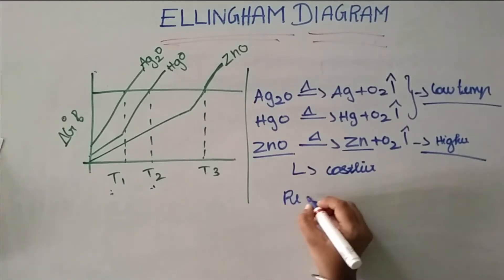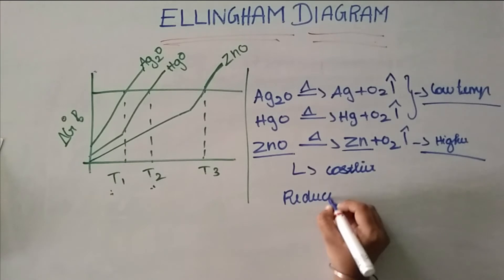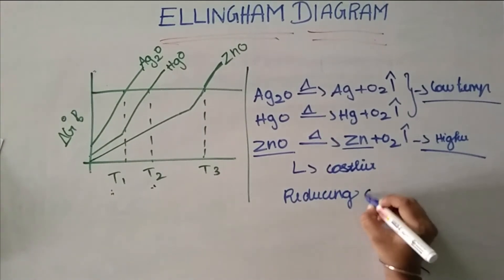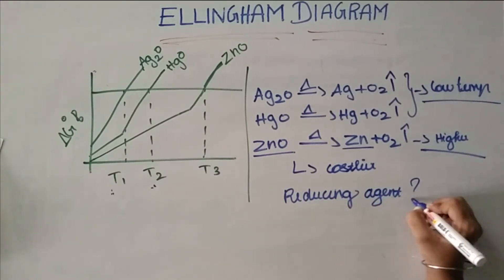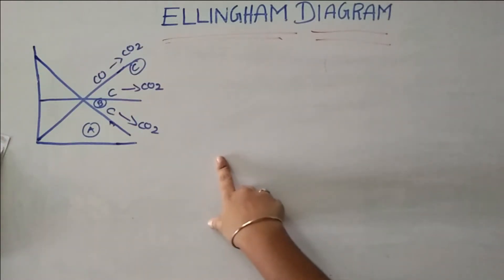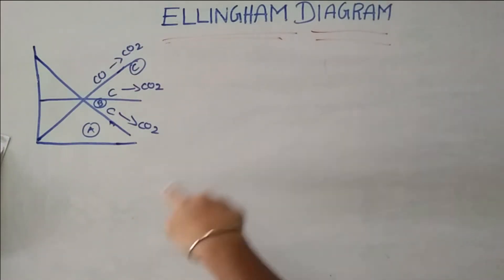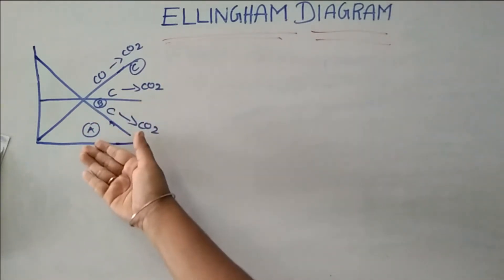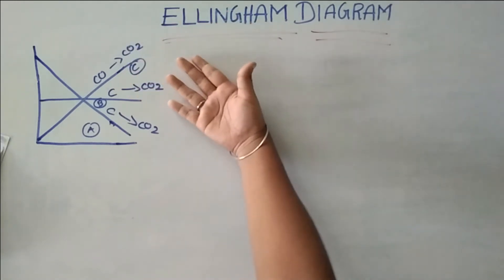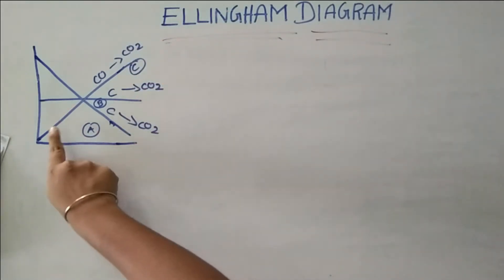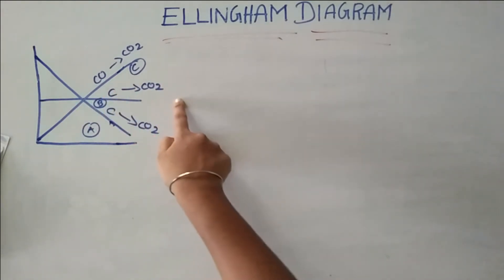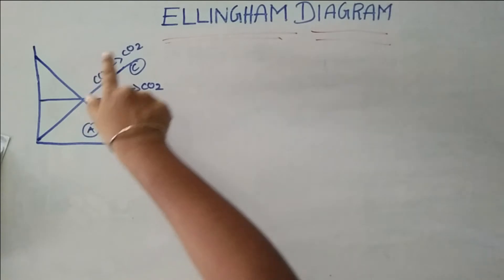That is the Ellingham diagram — used to find which is the best reducing agent. Now let's look at an example with three lines in the diagram. Line A represents carbon forming carbon dioxide (C + O₂ → CO₂). Line B represents carbon forming carbon monoxide. Line C represents carbon monoxide forming carbon dioxide.